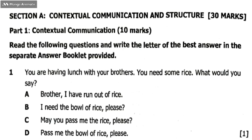We go to Section A. Section A is Contextual Communication and Structure, which has 30 marks. This section is divided into two parts. We go to Part 1, which is Contextual Communication, and it has 10 marks.